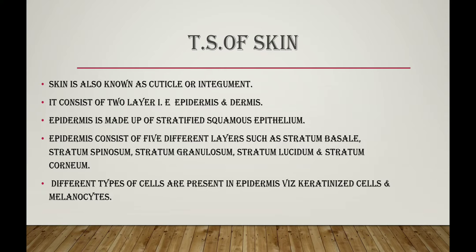Skin is also known as cuticle or integument. Skin forms the external covering of the body; it is the largest organ and constitutes 15–20% of total body mass. There are two types of skin: thin skin and thick skin. Thin skin is also called hairy skin, while thick skin is not hairy. Thin skin is present all over the body except the palm and sole, which contain thick skin.